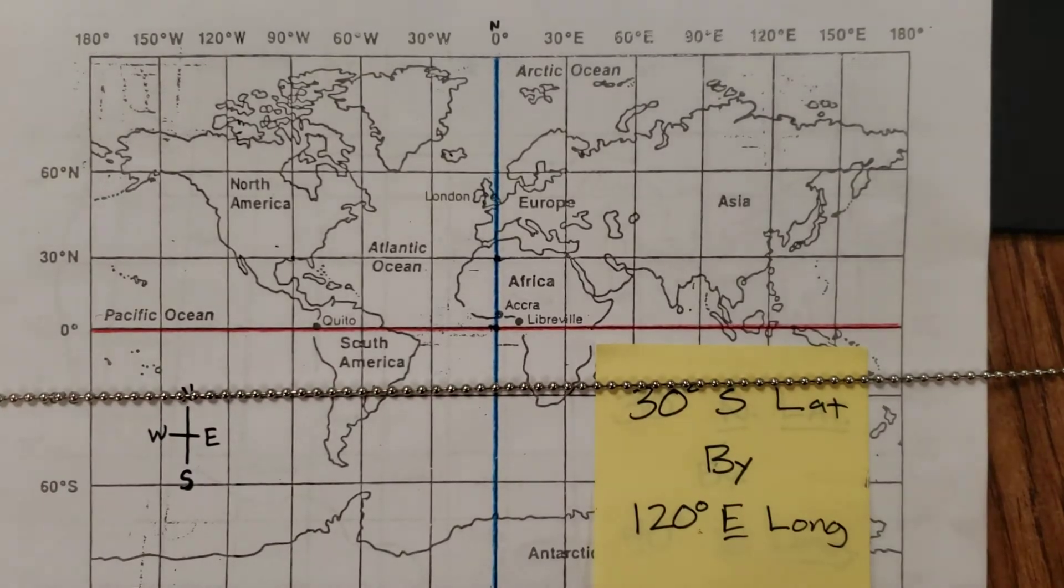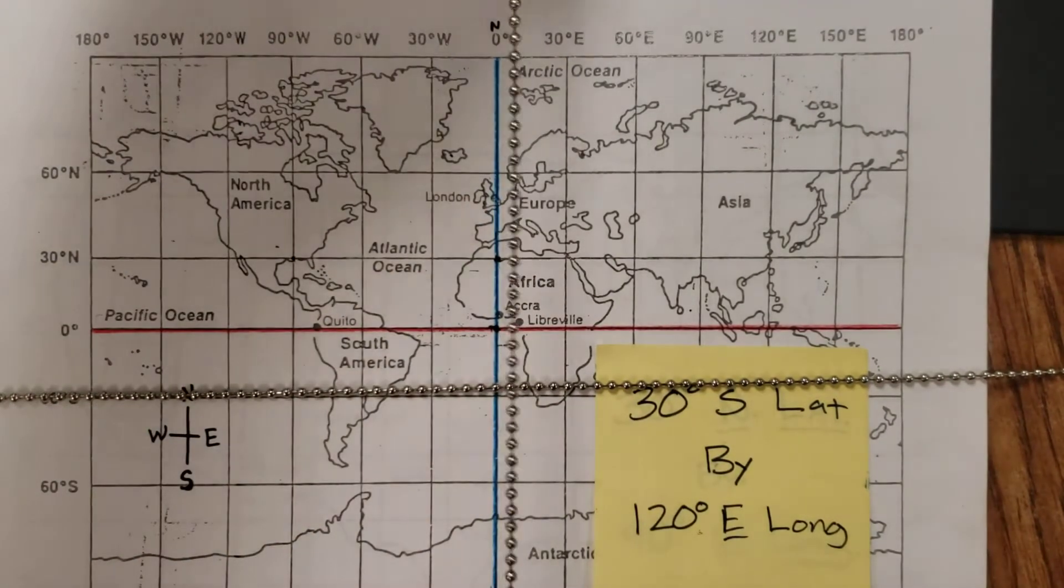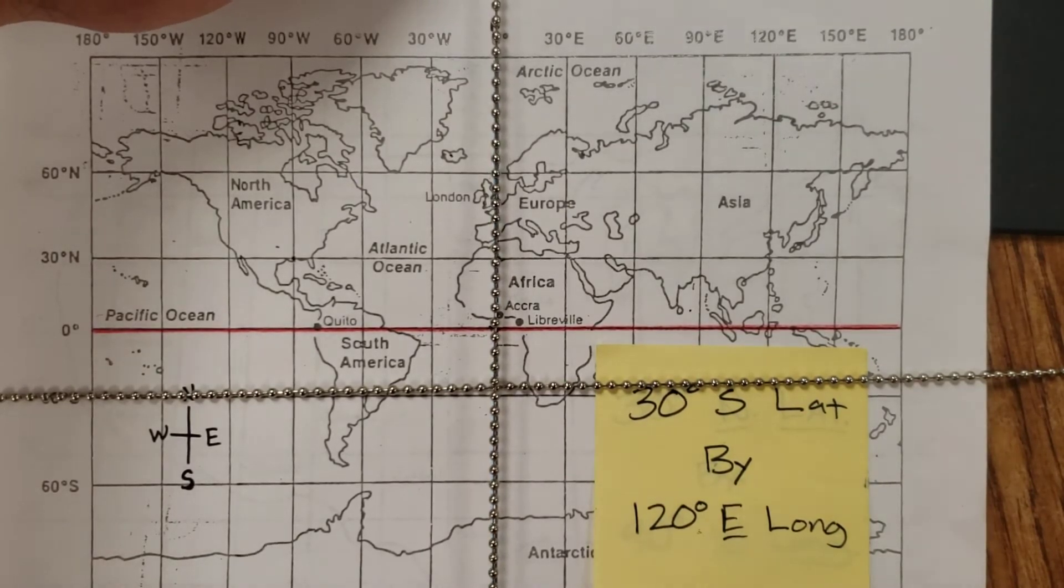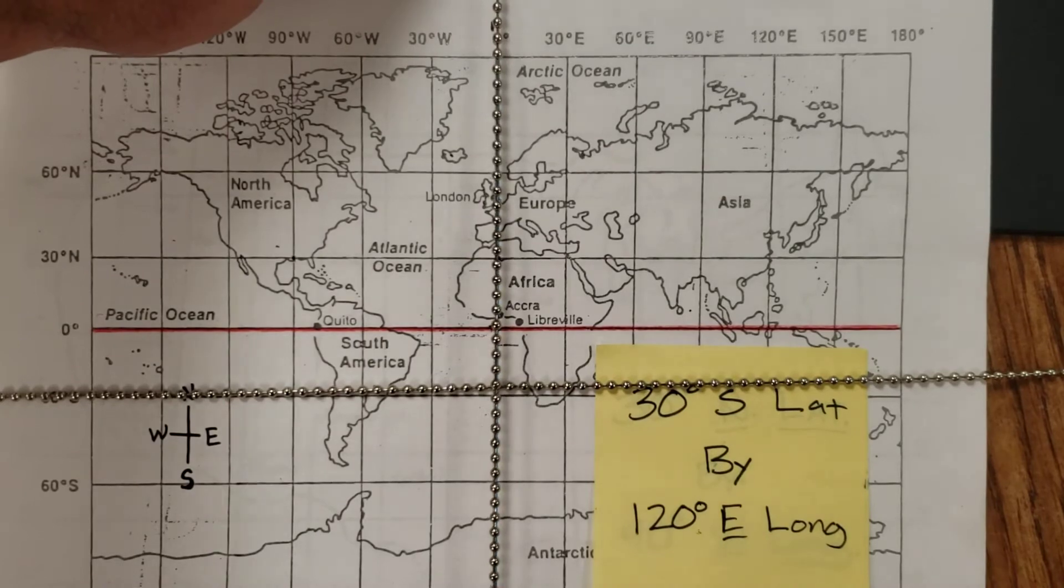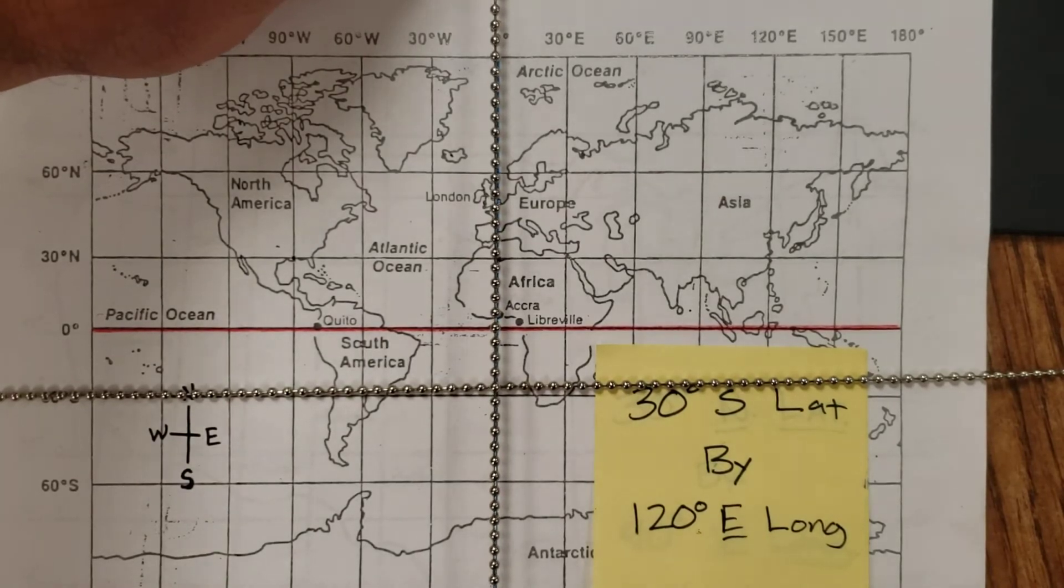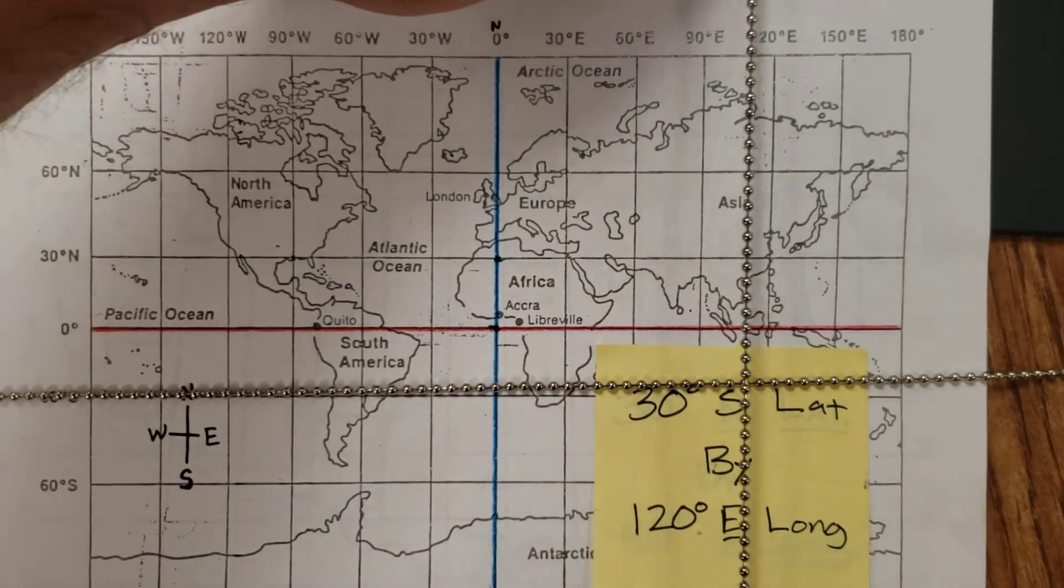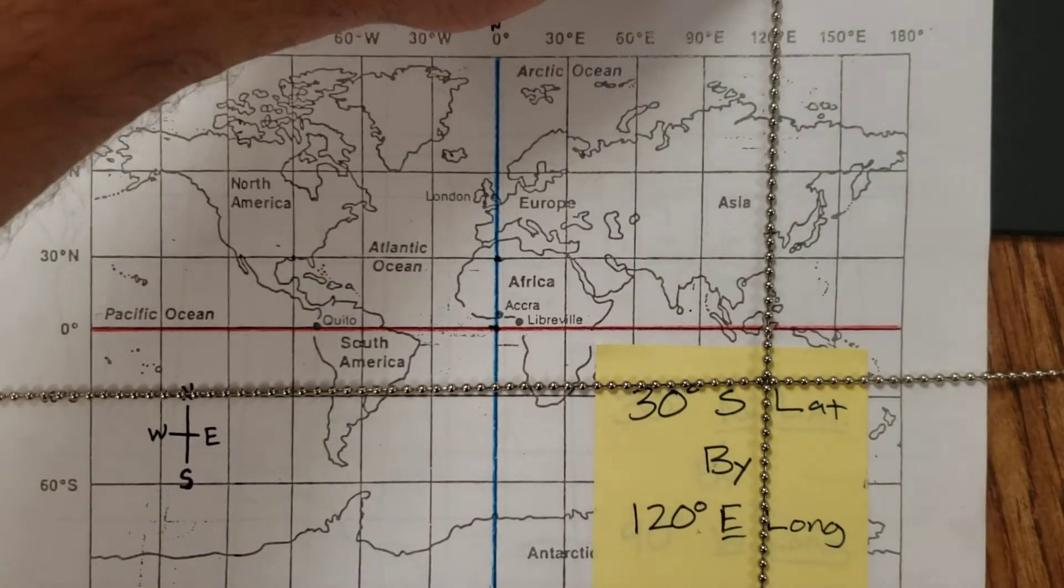By 120 degrees longitude. Here's a longitude line. And it wants me to go east. So figure out which way is east. And then you're going to move east. 30, 60, 90, 120. All right.